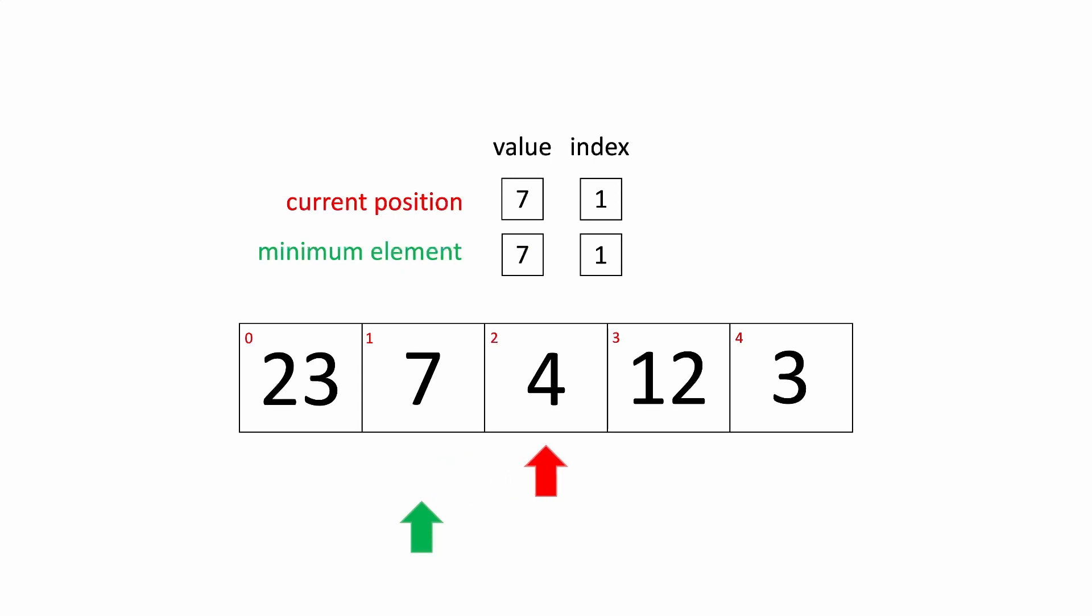We move the current position over to the next index and ask, is 4 less than 7? It is, so we move the minimum element pointer over to that index. We move the current position to the next array index. We ask, is 12 less than 4? It is not, so the current minimum element in this iteration is still 4.